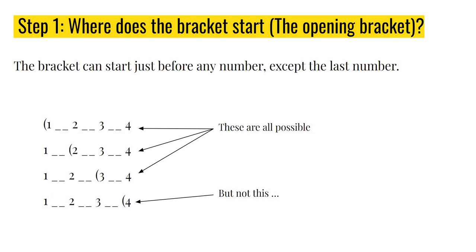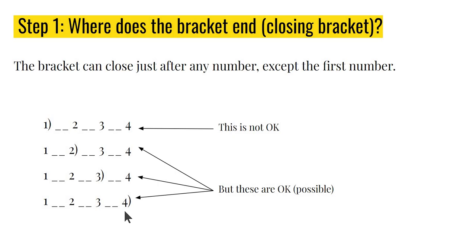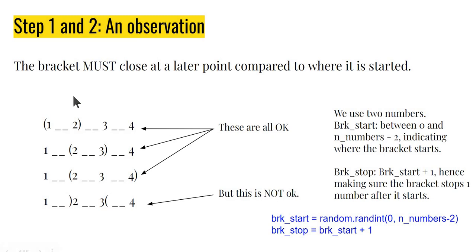Let's look at each of these steps. First, where does the opening bracket start? The opening bracket can start before any number except for the very last number. So I can have an opening bracket starting here, here, or here, but I cannot have an opening bracket starting at the last position because that is odd. Likewise, for the closing bracket, I can have it close anywhere after any number except the very first number — I can have the bracket closing here, here, or here, but not at the very beginning.